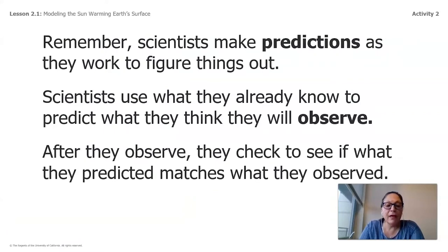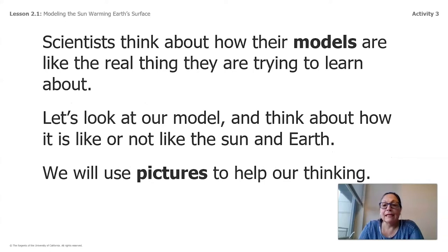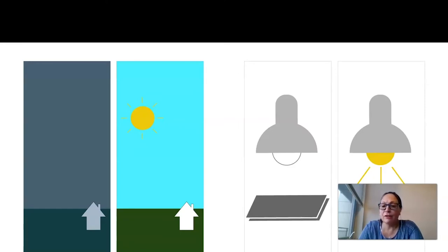So here we have, it's telling us that to remember that scientists make predictions as they work to figure things out. Scientists use what they already know to predict what they think they will observe. After they observe, they check to see if what they predicted matches what they observed. Scientists think about how their models are like the real thing they are trying to learn about. Let's look at our model and think about how it is like or not like the sun and earth. We will use pictures to help our thinking.